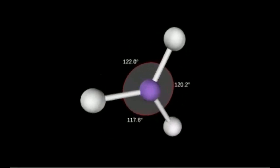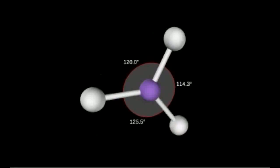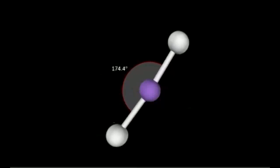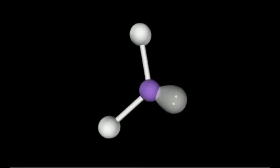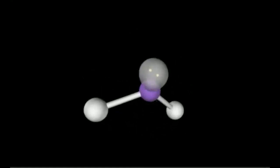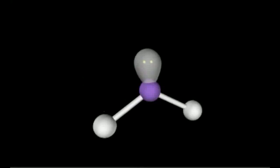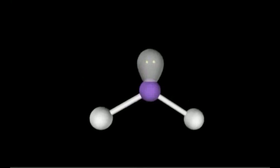If we replace one bonded pair of electrons with a lone pair of electrons, we get AB₂E₁. This lone pair of electrons occupies more space, so the bond angle changes from 120° to around 117°. It depends on the bonded atoms.